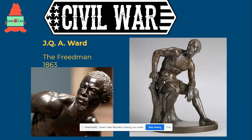Moving ahead to America in the 1860s, we're confronted with the Civil War. I chose this piece, which is at the Amon Carter Museum, created by a man named John Quincy Adams Ward — not to be confused with the original John Quincy Adams. John Quincy Adams Ward created this small-scale bronze piece, a very powerful sculptural representation of emancipation, modeled upon the issuing of the Emancipation Proclamation by President Abraham Lincoln in 1863.